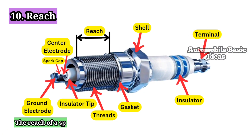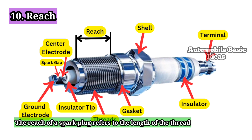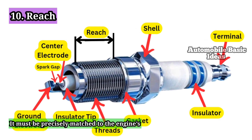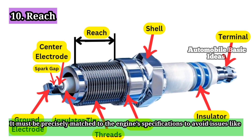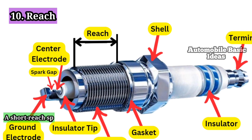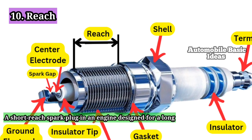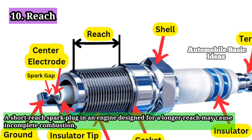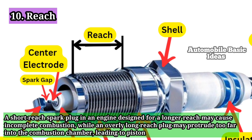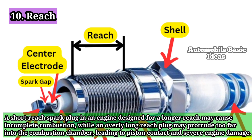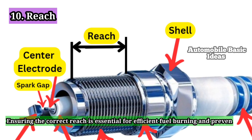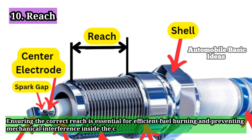10. Reach. The reach of a spark plug refers to the length of the threaded portion that extends into the cylinder head. It must be precisely matched to the engine's specifications to avoid issues like pre-ignition, detonation, or inadequate combustion. A short-reach spark plug in an engine designed for a longer reach may cause incomplete combustion, while an overly long-reach plug may protrude too far into the combustion chamber, leading to piston contact and severe engine damage. Ensuring the correct reach is essential for efficient fuel burning and preventing mechanical interference inside the cylinder.